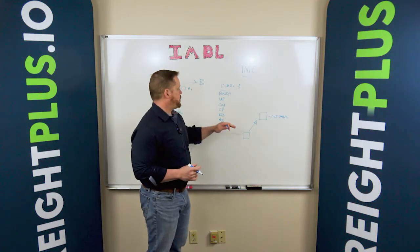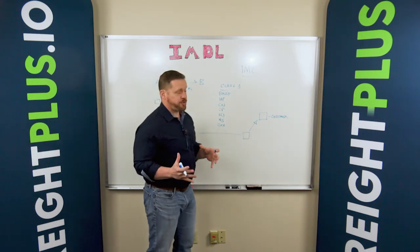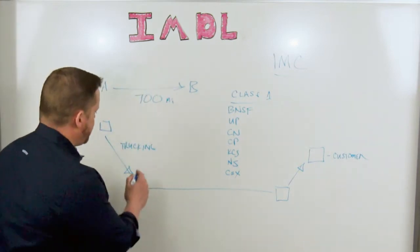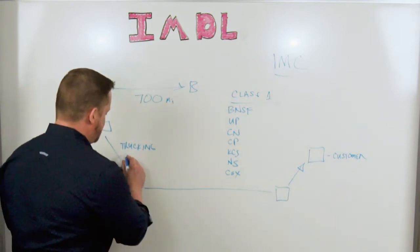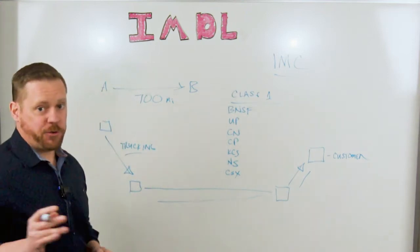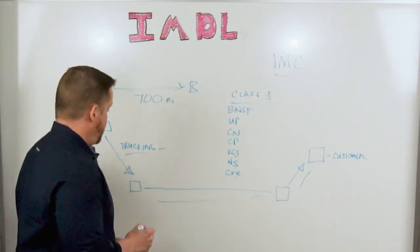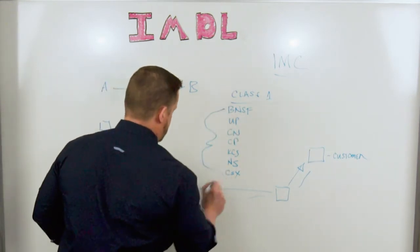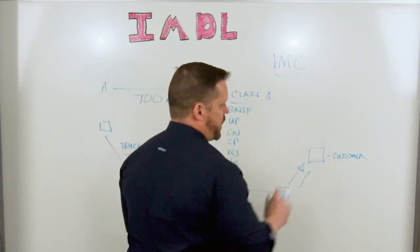your IMC is going to have pricing agreements with all of these rail providers here, so they can provide you a bundled service. And that bundled service is going to handle each of the movements between A and B. They'll handle the trucking portion, they'll handle the rail portion, and the destination trucking portion as well. So you as a shipper don't need to go out and separately negotiate trucking, making sure that trucking is coordinated with the actual rail providers. The IMC is going to handle all of that for you, all the way into final delivery to your customer.